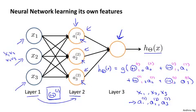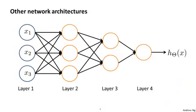I realized this example is described at a somewhat high level. And so I'm not sure if this intuition of the neural network, having more complex features will quite make sense yet. But if it doesn't yet, in the next two videos, I'm going to go through a specific example of how a neural network can use this hidden layer to compute more complex features to feed into this final output layer and how that can learn more complex hypotheses. So in case what I'm saying here doesn't quite make sense, stick with me for the next two videos and hopefully after working through those examples, this explanation will make a little bit more sense.